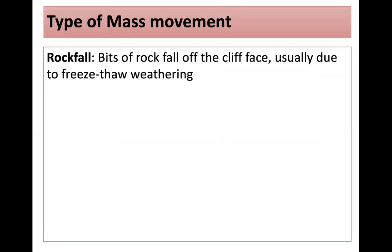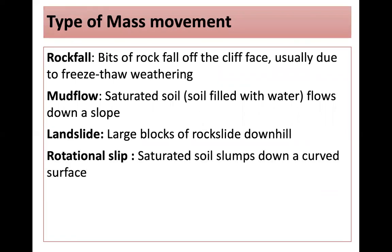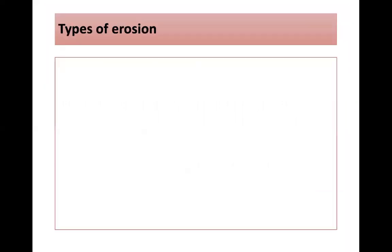There are a few types of mass movement. Rockfall is where bits of rock fall off a cliff face, usually due to freeze-thaw weathering. Mud flows occur where saturated soil flows down a slope. Landslides are where large blocks of rock slide down a hill. And rotational slips are where saturated soil slumps down a curved surface.